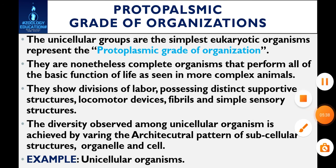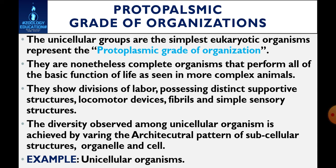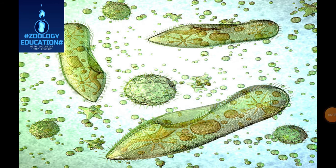Let's start our first: protoplasmic grade of organization. The unicellular groups are the simplest eukaryotic organisms and represent the protoplasmic grade of organization. Unicellular means having a single cell. They are complete organisms that perform all of the basic functions of life, as seen in more complex animals. They show division of labor, possessing distinct supportive structures, locomotor devices, fibrils, and simple sensory structures. The diversity observed among unicellular organisms is achieved by varying the architectural pattern of subcellular structures, organelles, and cells. An example of a unicellular organism is Paramecium, which is flat and slipper-like.